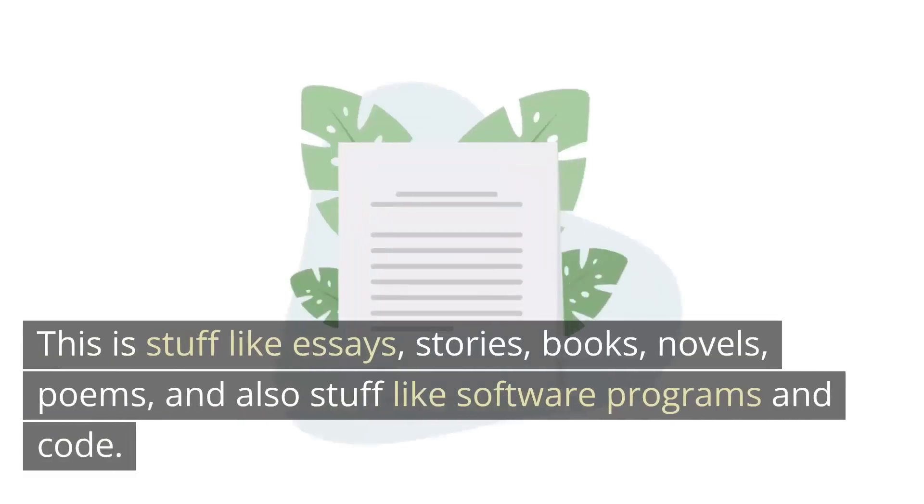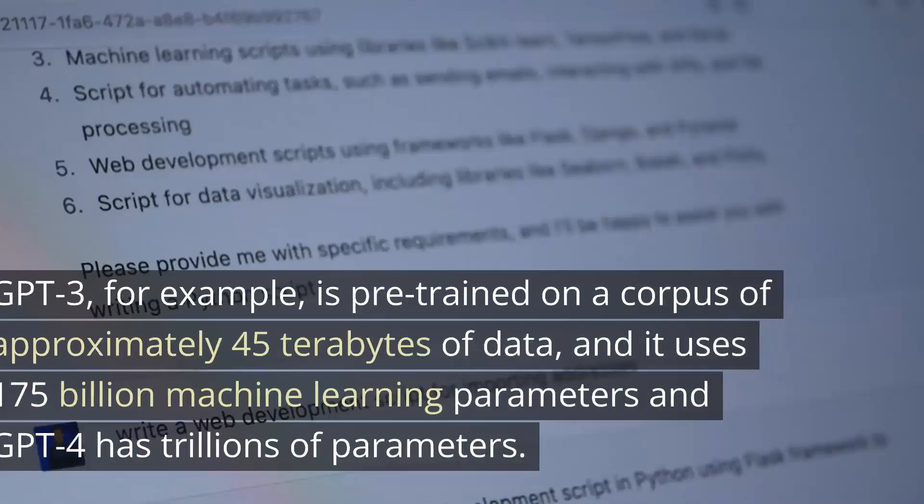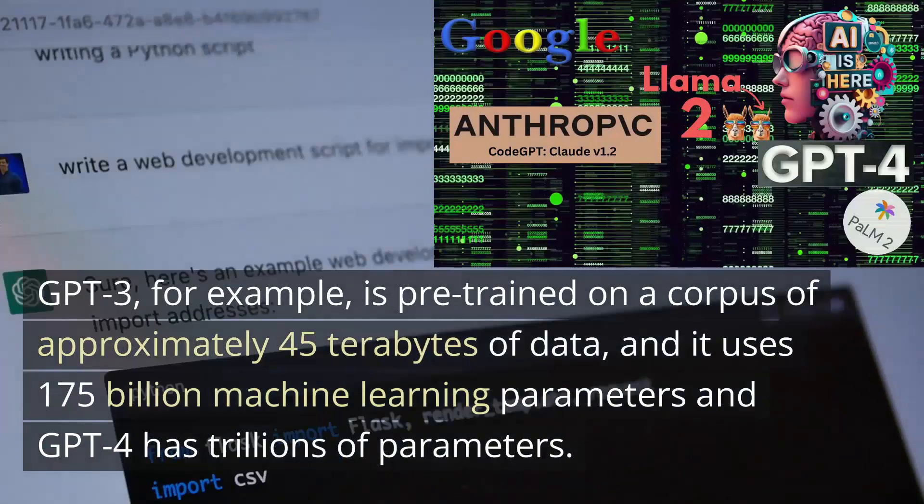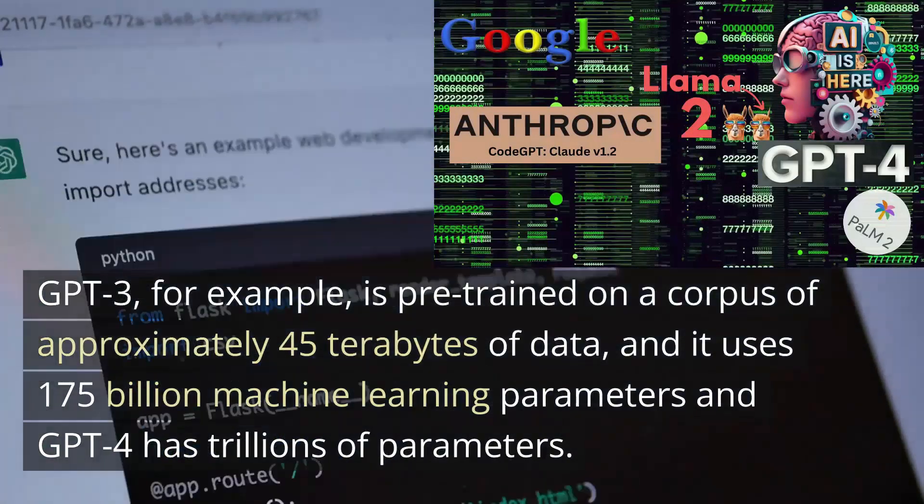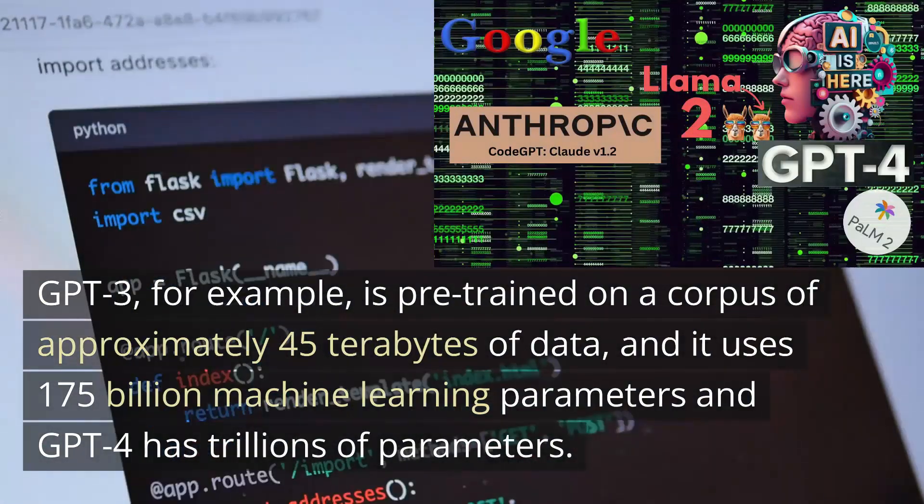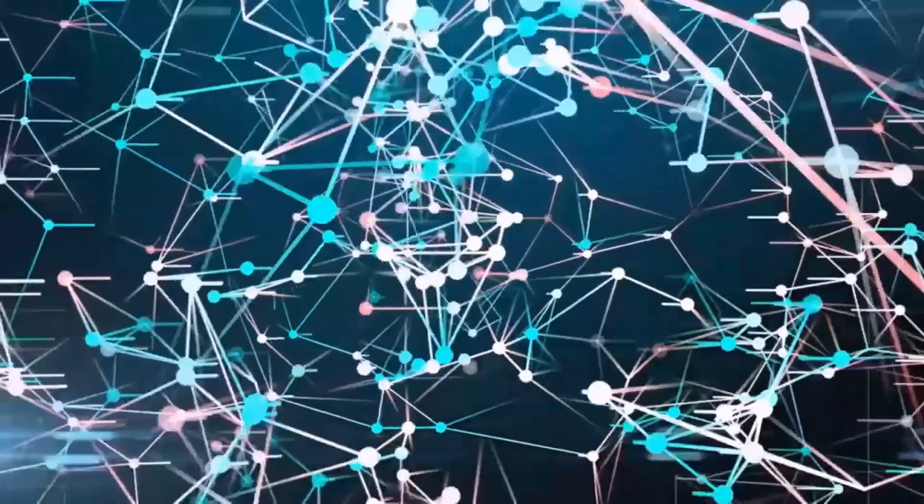LLMs, which means that text-based large language models are instances of foundation models specifically trained to understand and work on text and text-like things. This is stuff like essays, stories, books, novels, poems, and also software programs in code. GPT-3, for example, is pre-trained on a corpus of approximately 45 terabytes of data and uses 175 billion machine learning parameters. And GPT-4 has trillions of parameters.